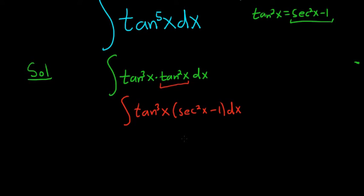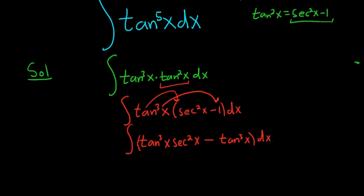I don't see an immediate way to do the problem, right? If you let u be tangent, then du is secant squared. So maybe we should distribute things first. So distributing the tangent cubed, it's going to give us tangent cubed x and then parentheses dx. We should be able to integrate this first piece, right? If you let u be tangent, the derivative is secant squared. The only issue is the second piece.